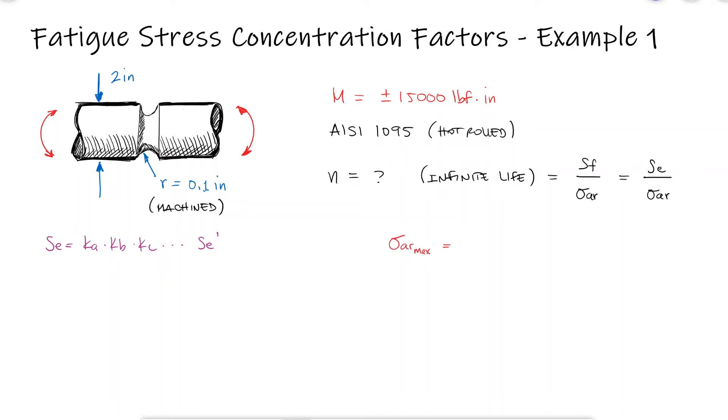The first rough estimate for the endurance limit is one half of the ultimate strength. The surface factor KA will be that for a machined surface, since the maximum stress will occur at the groove which is machined. And notice that I'm using the coefficients in KSI, not megapascals.